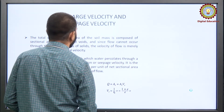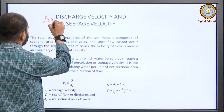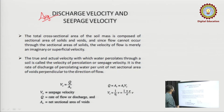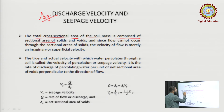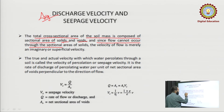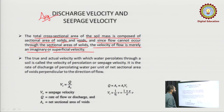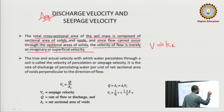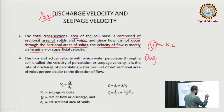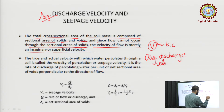Now, discharge velocity and seepage velocity. The total cross-sectional area of the soil mass is composed of cross-sectional areas of solid particles and voids. Since flow cannot occur through the cross-sectional areas of solids, the velocity of flow using the total area is merely an imaginary or superficial velocity — the average discharge velocity.